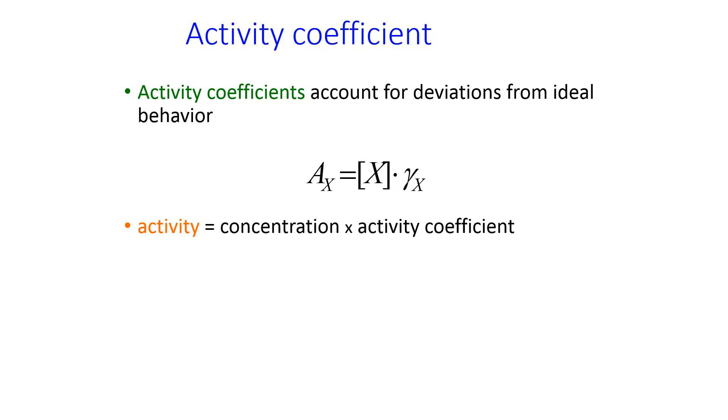And the activity is used to define the real equilibrium constant, K. So the definition we had in lecture previously was that the equilibrium constant is the concentrations of products over reactants raised to their stoichiometric coefficients.